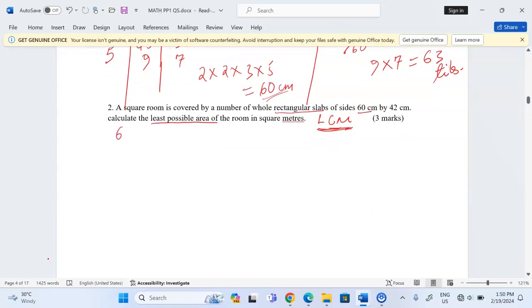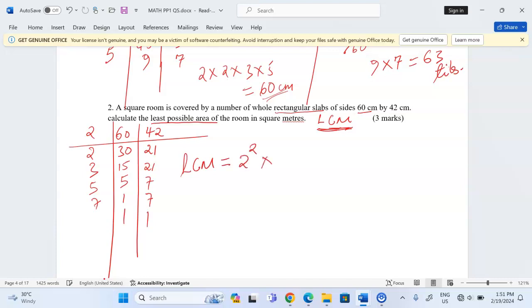So we begin by 2. This gives us 30 and 21. By 2 again, 15 and 21 remains. By 3, this is going to be 5, and by 3 is 7. Then by 5, this becomes 1 and 7. By 7 is going to be 1. Therefore, the LCM is going to be 2 squared by 3 by 5 by 7. This is 4 multiplied by 15 to give us 60. 60 by 7 will give us 420 centimeters.